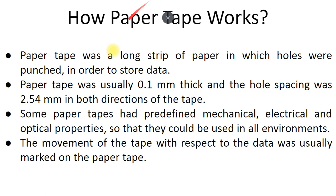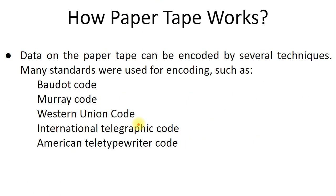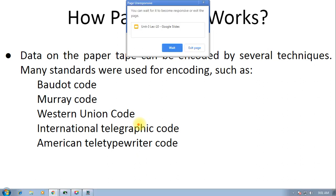How paper tape works - data on the paper tape can be encoded by several techniques. You cannot type data like English word letters because in holes you have to encode data in some way. The data is written using codes such as Baudot code, Murray code, Western Union code, International Telegraphic Code, and American Teletype Writer code.